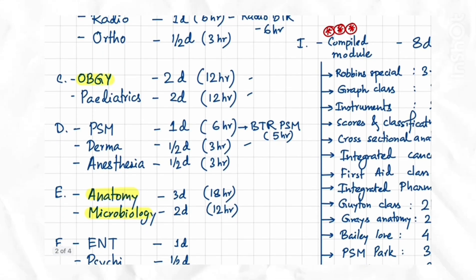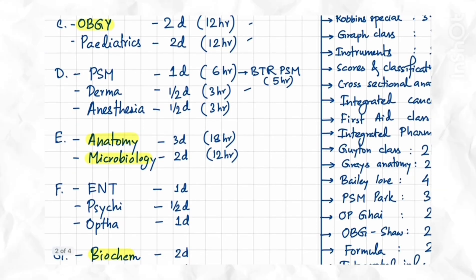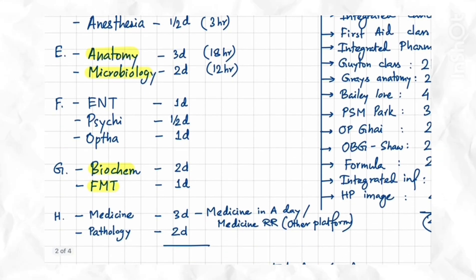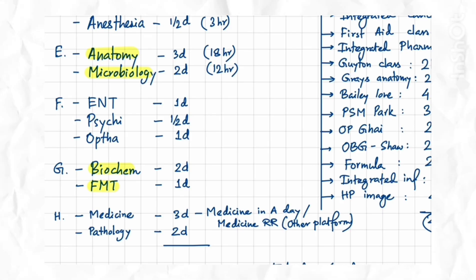I've allotted half a day for Dermatology and half a day for Anesthesia, three days for Anatomy, two days for Microbiology, one day for ENT, half a day for Psychiatry, and one day for Ophthalmology. In the last set: two days for Biochemistry and one day for FMT. For Medicine I've allotted three days — watch the Medicine-in-a-Day module from CereBellumAP or Medicine RR from any other platform. Two days are allotted for Pathology as well.